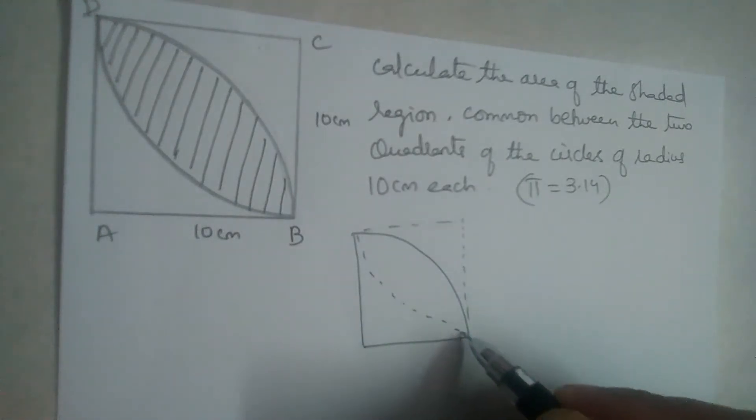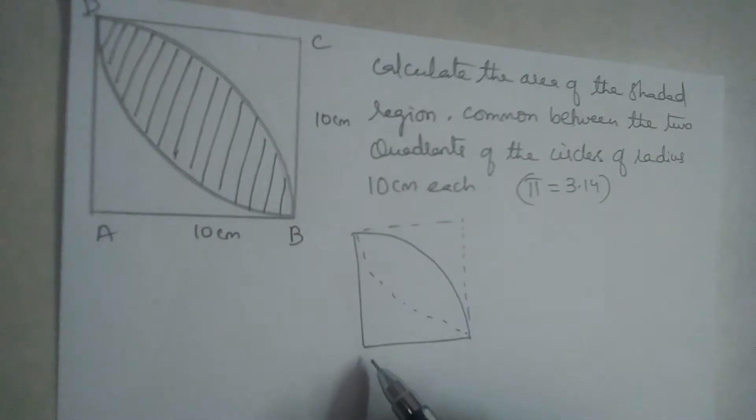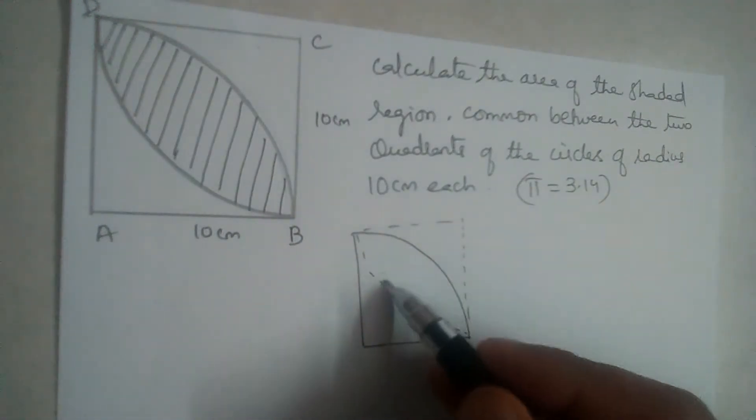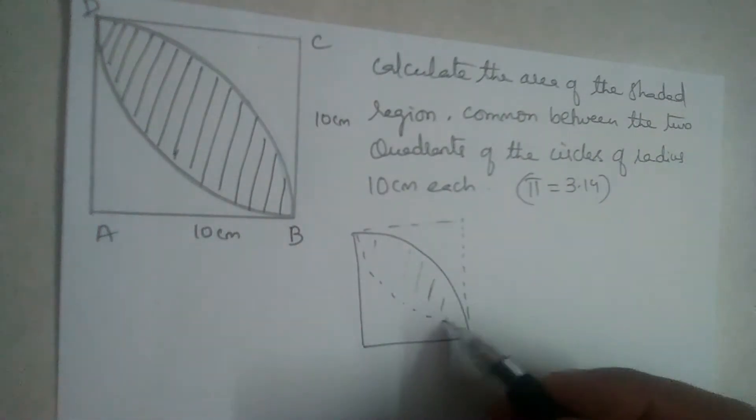Like this. The dotted quadrant and this quadrant. We need to find the common part between the two quadrants, this region.